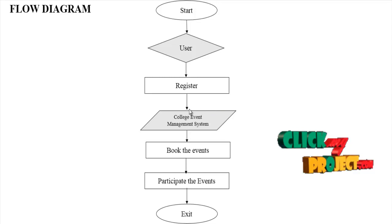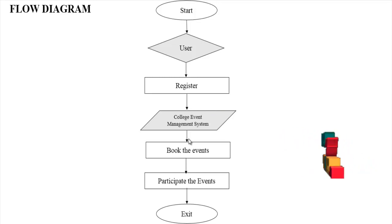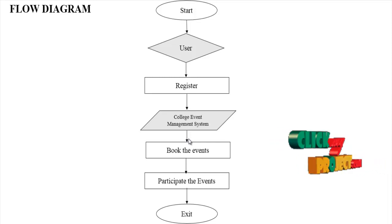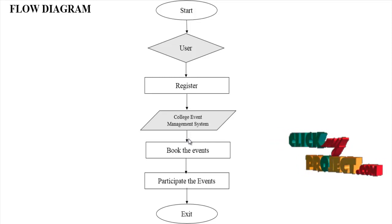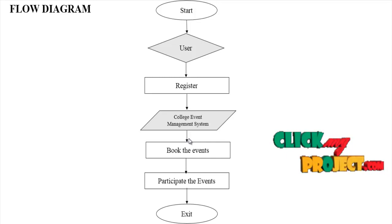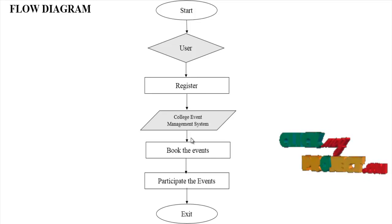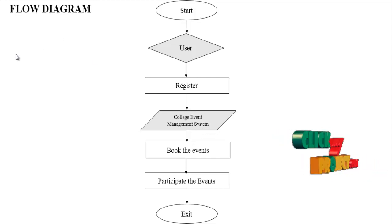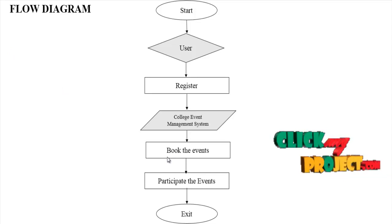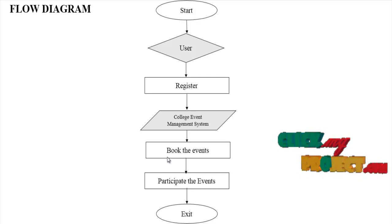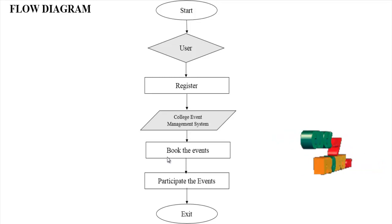The college event management system allows the user to book events such as technical events, on-stage events, gaming events, and off-stage events. The user can book more than one event. Then, the user can pay some money to book the events. The details will be stored in the database. Then, the user can participate in the events and exit the page. This is the flow of our process.